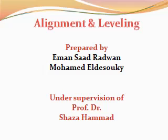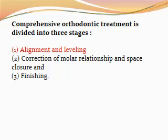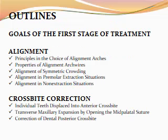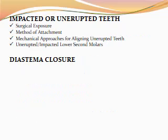Our topic is about alignment and leveling. Comprehensive orthodontic treatment is divided into three stages: alignment and leveling, correction of molar relationship and space closure, and finally finishing. The outlines of our lecture cover the goals of the first stage of treatment, alignment, cross-bite correction, impacted teeth, and diastema closure.